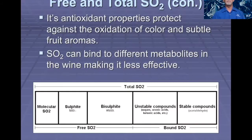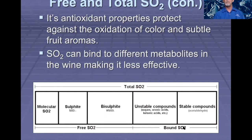These antioxidant properties protect our wine against oxidation — oxidation of the color, oxidation of the aroma compounds, particularly the subtle fruit aromas that we're interested in. Sulfite can also be bound to other metabolites in the wine, making it less effective. We have the molecular form, the sulfite, and the bisulfite, and we have unstable bound SO2 compounds which include sugars, uronic acids, and ketonic acids, and then stable compounds — particularly sulfites that are bound to acetaldehyde.